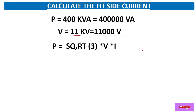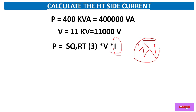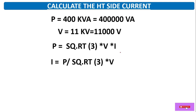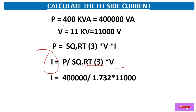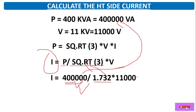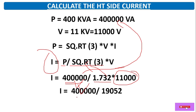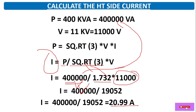The formula for apparent power for three phase is: P = √3 × V × I, where V is system voltage and I is current. We are going to calculate the current on the HV side and according to this current we will finalize the size of the DO fuse. So current I = P / (√3 × V). Putting in the values: P = 400,000 VA, √3 = 1.732, V = 11,000 volts. Calculated current comes to 20.99 amperes.